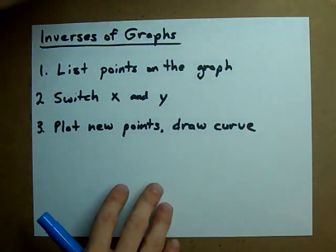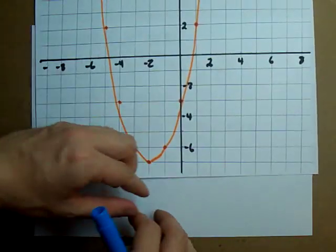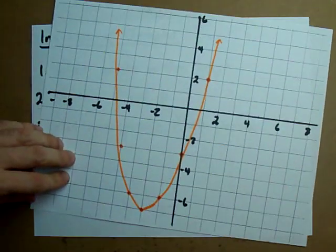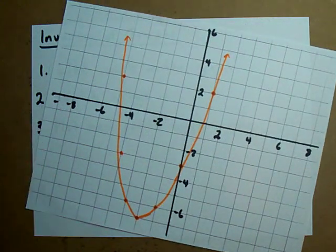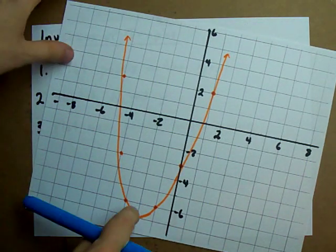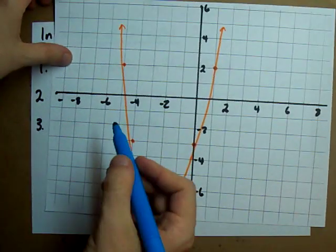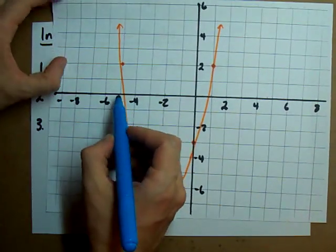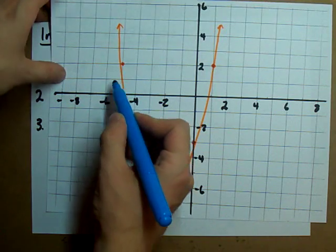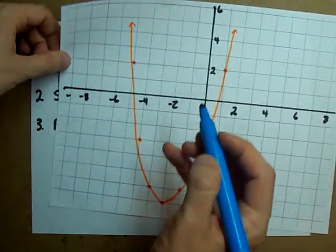Let's see what we can do. Here's a parabola. Are there any points on the parabola that we can see? Well, I see one here at (-5, 2).